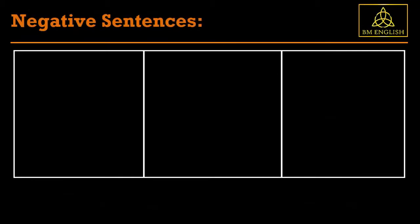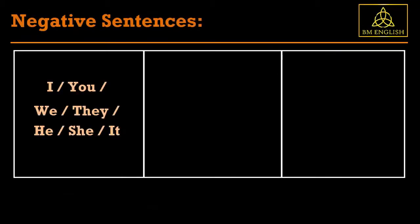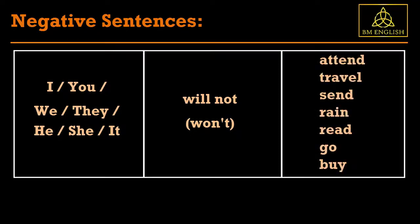For negative sentences: I, you, we, they, he, she, it — will not, or the short form won't — attend, travel, send, rain, read, go, buy.